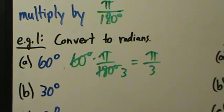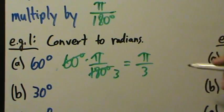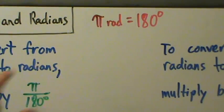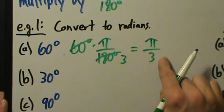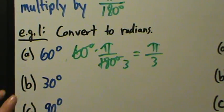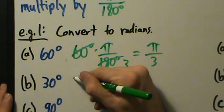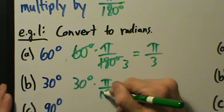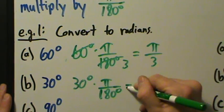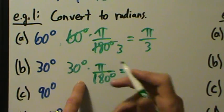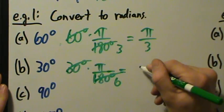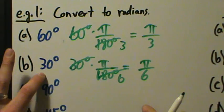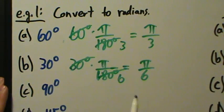For radians, you can just drop the unit — so pi over 3 radians equals 60 degrees. For 30 degrees, multiply by pi over 180 degrees: 30 goes into 180 six times, so this is pi over 6. So pi over 6 radians equals 30 degrees.